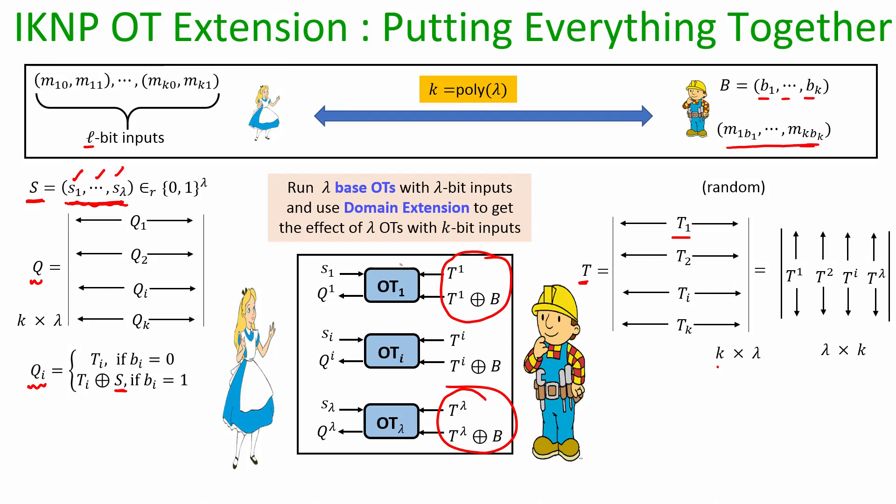These are the lambda OTs which Alice and Bob have to execute, they are often called as the base OTs, and here we can use domain extension as well to make it more efficient. Why domain extension? The input length of Bob's messages are all k bits long. And how many such OT instances have to be executed? Lambda such OT instances. We know that using domain extension Bob can actually run lambda number of OT instances with only lambda bit inputs.